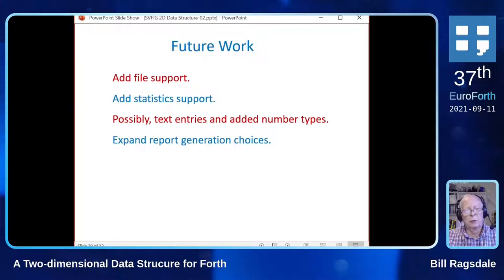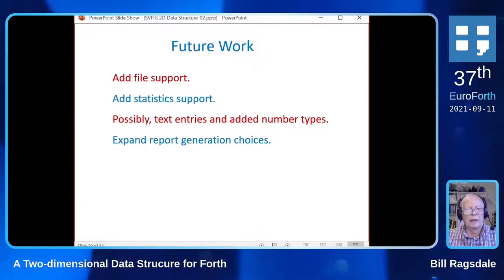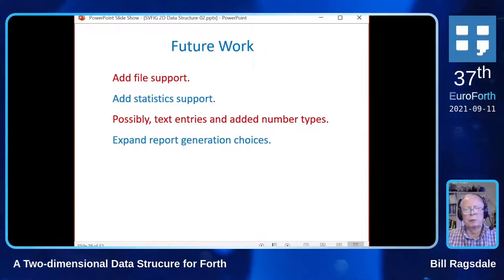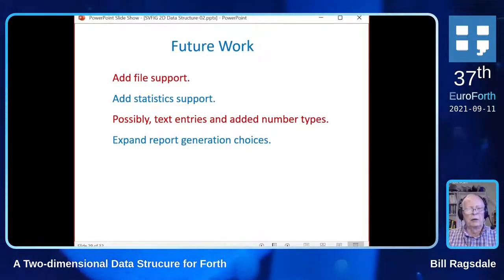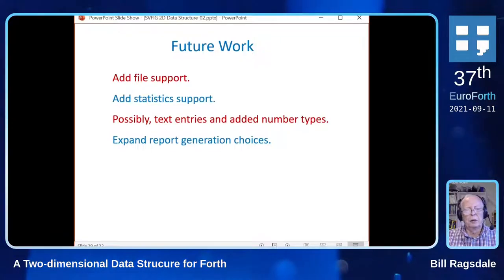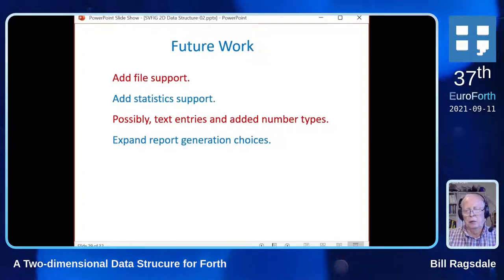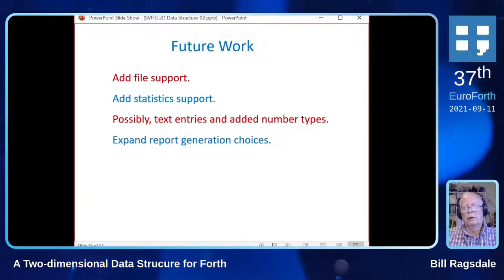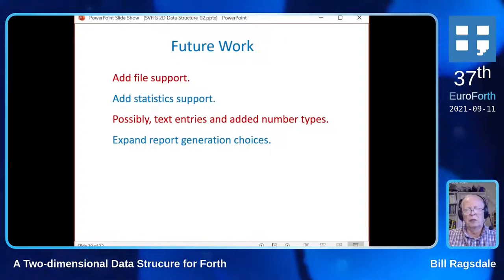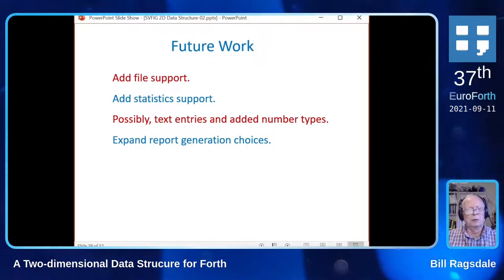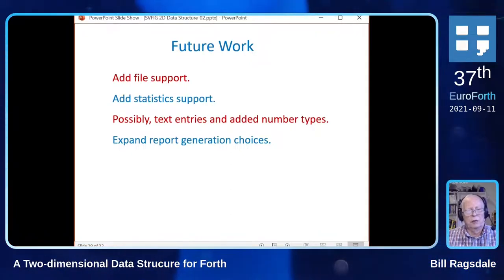Future work. I currently don't have the cell support working. I'm in the process of adding statistics support with all the standard operations we would expect. The future entry might be expanding the ability for text entries. And with a caution toward number types. Dr. Noble in his book, Scientific Forth, uses typed numbers. And it makes his code quite a bit more difficult, quite a bit more involved, because he's supporting about four number types simultaneously in the same matrices. And finally, I have some limited report generation choices, and that certainly can be expanded.